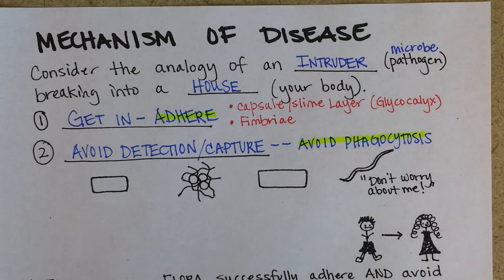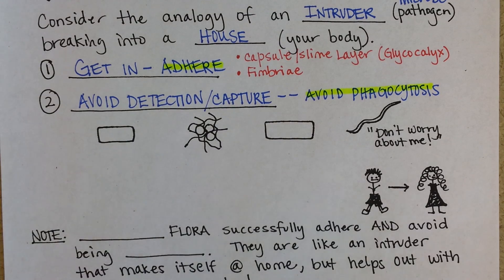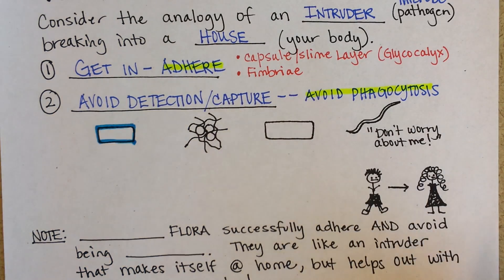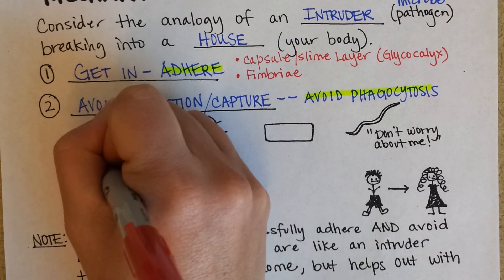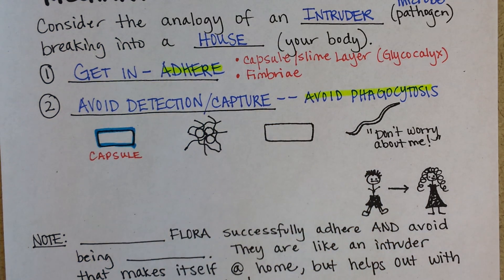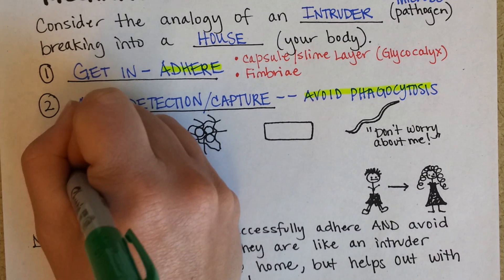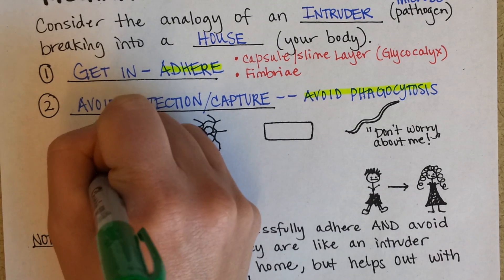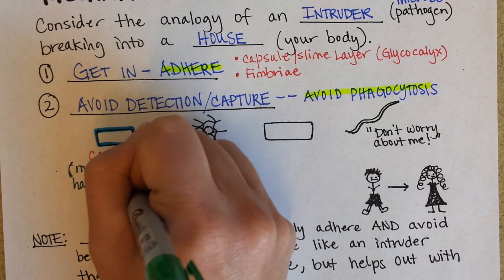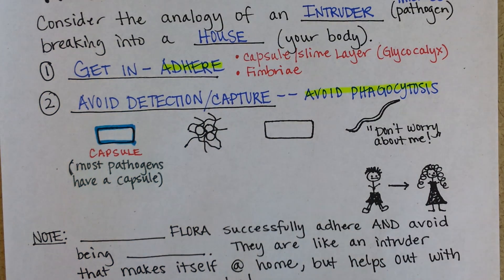Now let's look at how bacteria can avoid detection or capture. One way, again, comes back to that capsule. The capsule can both help them adhere and also avoid phagocytosis — most pathogens have a capsule. Streptococcus pneumoniae, if it doesn't have a capsule, is usually non-virulent and doesn't cause disease, whereas if it does have a capsule it is more likely to cause disease.